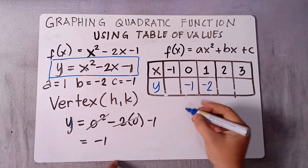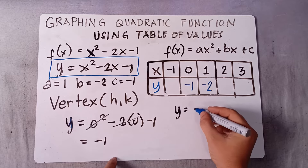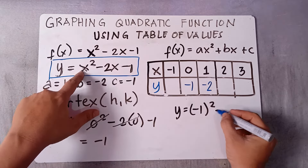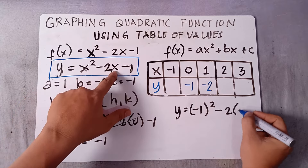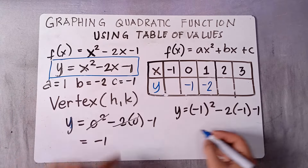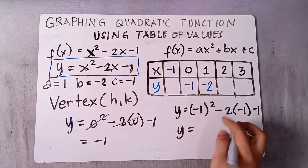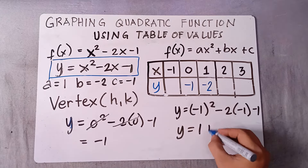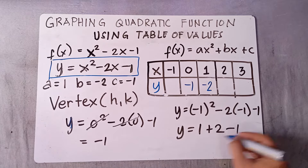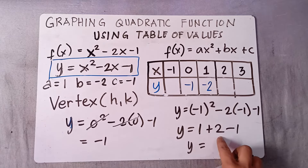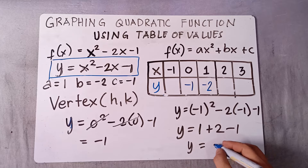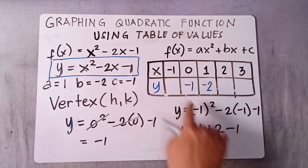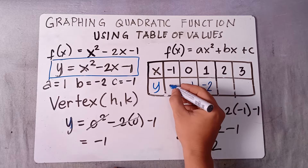Let's try x = -1: y = (-1)² - 2(-1) - 1. Negative 1 times negative 1 is positive 1, negative 2 times negative 1 is positive 2, minus 1. So y = 1 + 2 - 1 = positive 2. If x is -1, our y is positive 2.